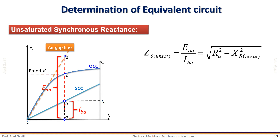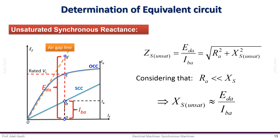We know that the synchronous impedance ZS is given also by this equation. Considering that the armature resistance RA is very small compared to the synchronous reactance XS, we can obtain the unsaturated value of the synchronous reactance XS as equal to EDA over IBA, which is ZS unsaturated. So we were able to find the unsaturated value of the synchronous reactance from the open circuit and short circuit characteristics. However, during saturated operating conditions the saturated synchronous reactance takes a different value that we'll see how to determine in the next slides.